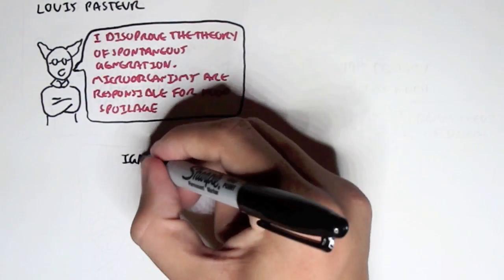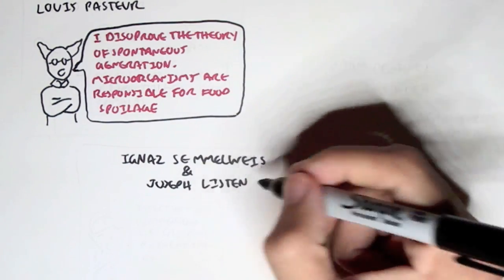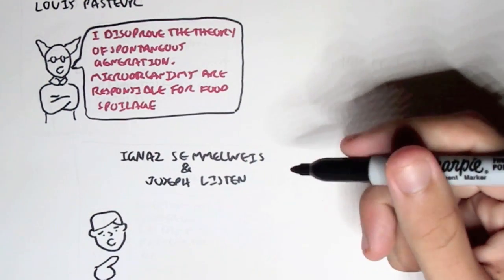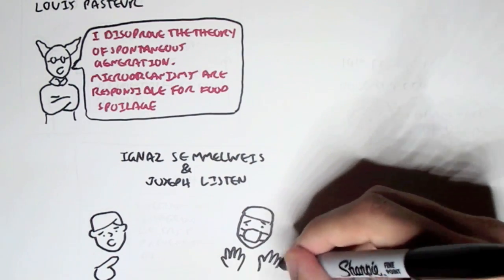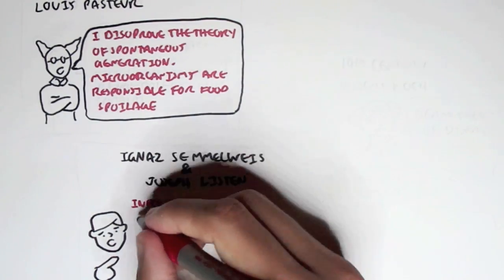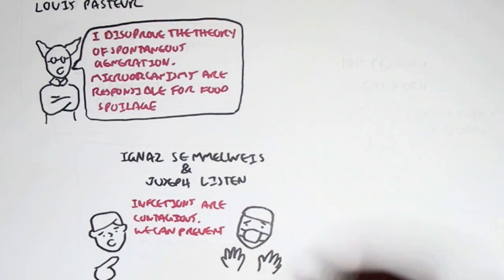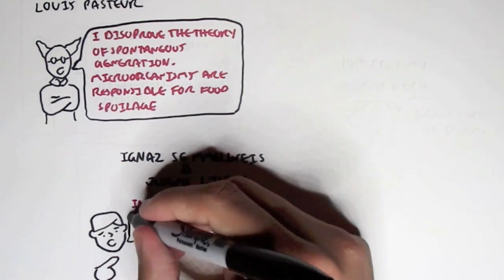And then there are these two other people, these two other men, from different countries, from different fields. One was by the name of Ignaz Semmelweis, and the other one is Joseph Lister, who was actually a surgeon or doctor. And essentially what they said is that infections are contagious, which was quite obvious, and that they proposed ways in preventing these contagious infections.